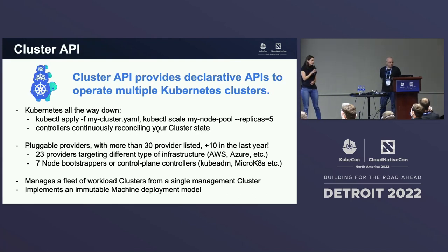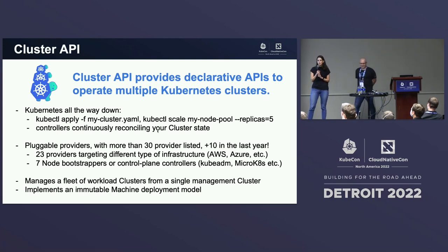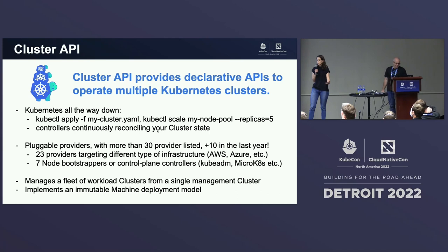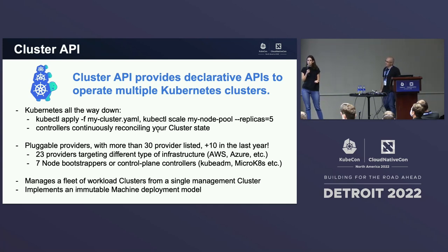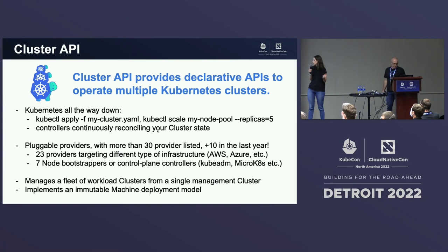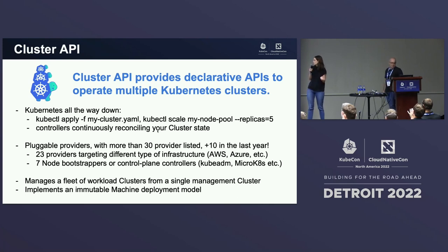On top of KubeADM — both spellings are accepted and valid — we have Cluster API. Cluster API is a tool that provides declarative APIs to manage fleets of Kubernetes clusters. We're extending the Kubernetes API through CRDs to define the desired state of your clusters, then using controllers to reconcile that state across various infrastructures. It's completely pluggable — cloud and infrastructure agnostic at its core — with 30-plus providers across very different infrastructures. It's very powerful for managing a fleet of clusters from a single management cluster across different tenants and infrastructures, and it implements an immutable machine deployment model with rolling upgrades so you can upgrade and downgrade safely.